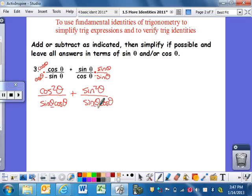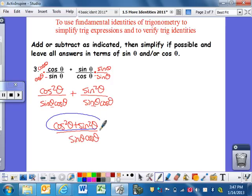So we can say that it's cosine squared theta plus sine squared theta over sine theta cosine theta. Now if you ever can simplify, you can. You always need to look out for this thing that's on the top. Cosine squared theta plus sine squared theta equals 1. And that's how you simplify. It's just 1 over your denominator.